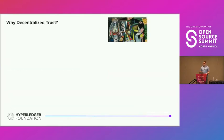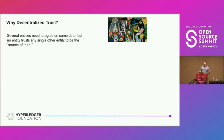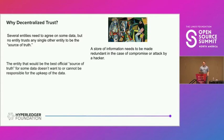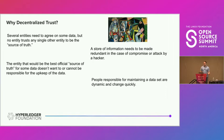Why do we want decentralized trust? There are many reasons. We could have several entities that need to agree on data but no single entity trusts any other to be the source of truth. We could need redundancy against compromise or hacker attacks. There may be cases where the best official source of truth doesn't want to be responsible for the data — very common for government applications. Or the people maintaining a dataset are dynamic and change quickly.